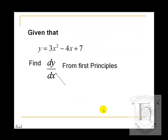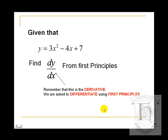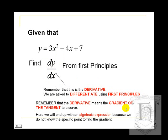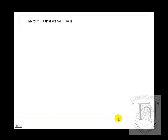We kind of know that the answer is going to be 6x minus 4, from our existing knowledge of differentiation. But we must remember what dy/dx actually is — dy/dx is the derivative of the function. We are asked to differentiate using first principles. The derivative means the gradient of the tangent of the curve. We will end up with an algebraic expression, not just a numerical answer, because we are finding dy/dx generally at any point on the curve.